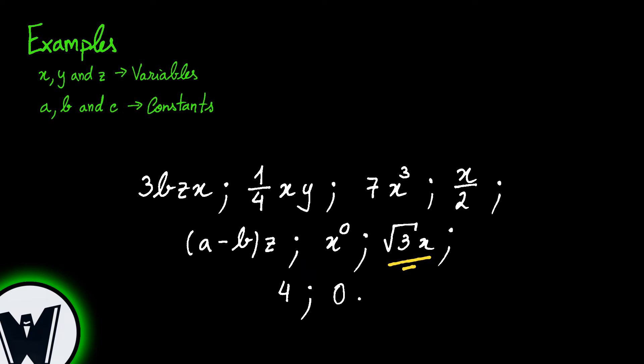The next example shows a root square of the number 3 multiplying it with the variable x. This is a monomial since the root square of 3 is a number written in its exact simplified form. Finally, 4 is a number so it is a monomial composed only by the numerical part, and with the number 0 happens the same thing, the 0 monomial.